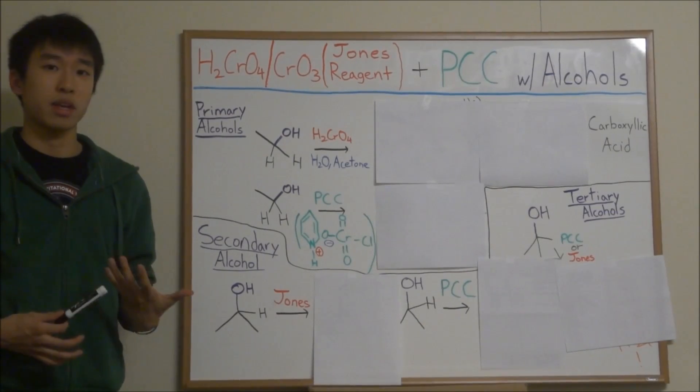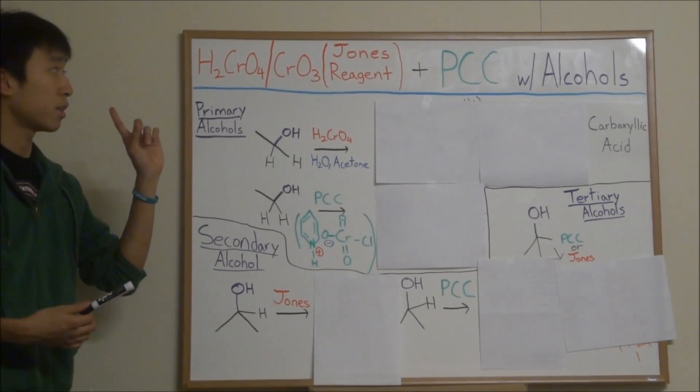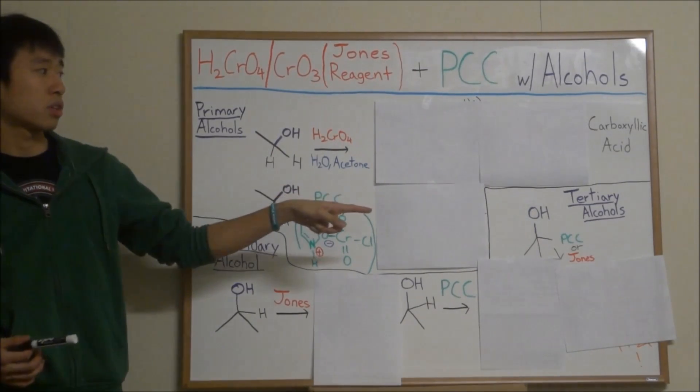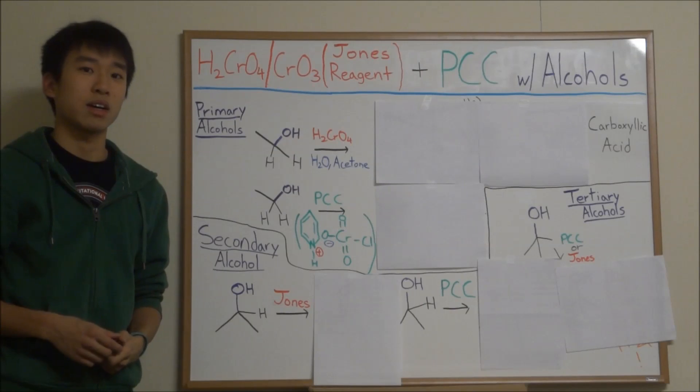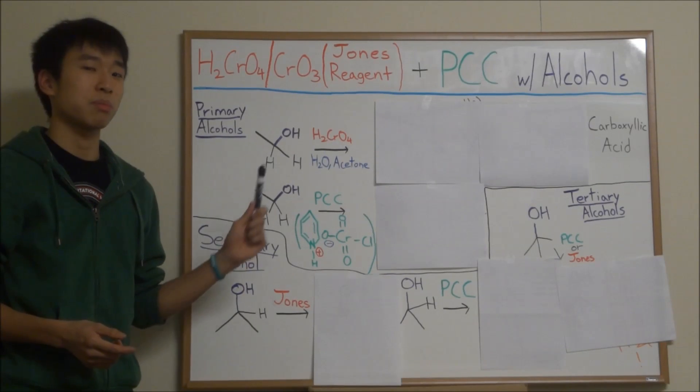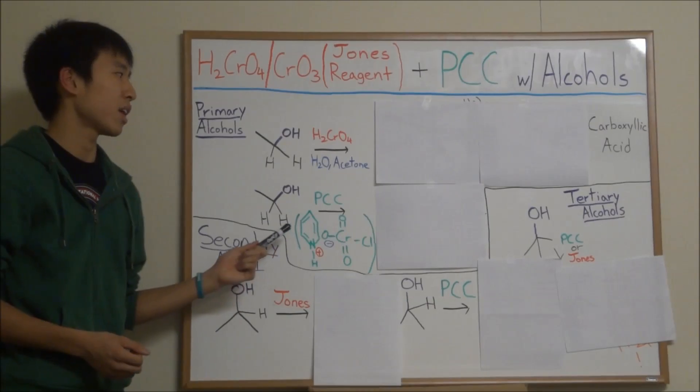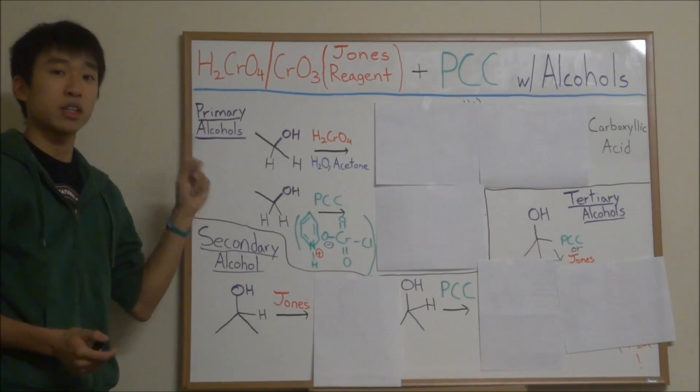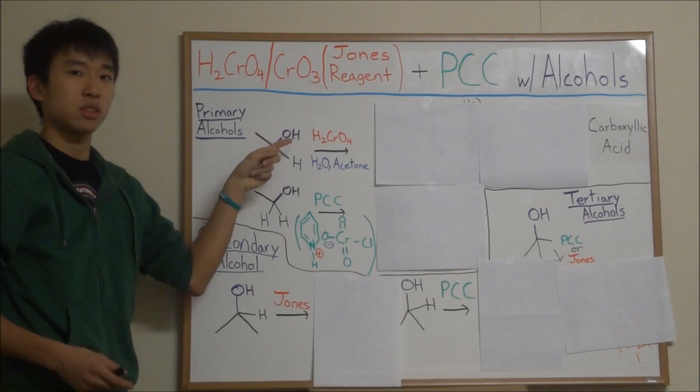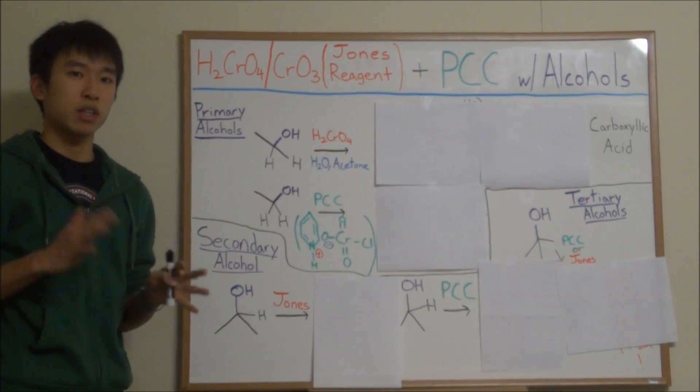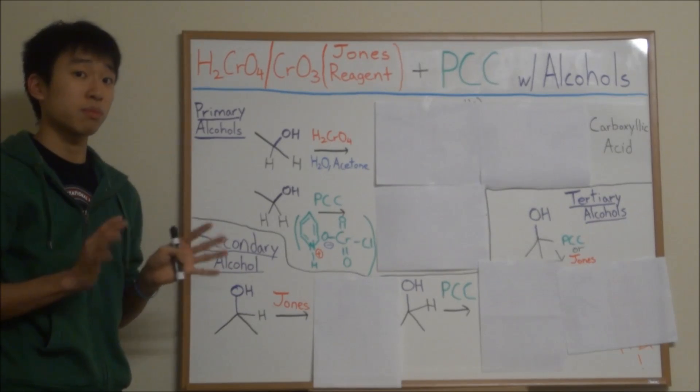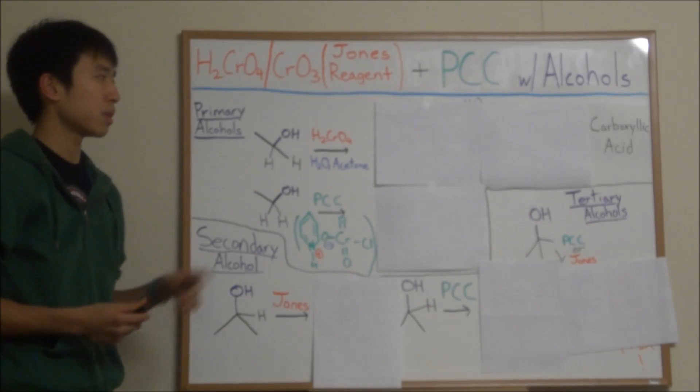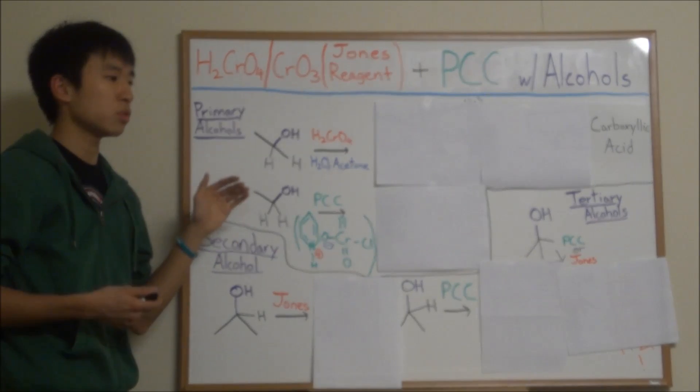We're basically going to be taking a look at the effects of the Jones Reagent and PCC on primary alcohols, secondary alcohols, and tertiary alcohols. The Jones Reagent is just usually a variation of a chromate or chromium reagent. If you see chromium there and a couple of oxygens, chances are it's going to be a Jones Reagent.